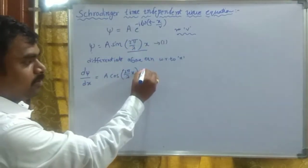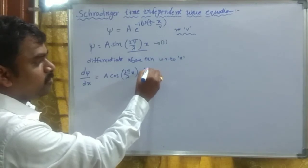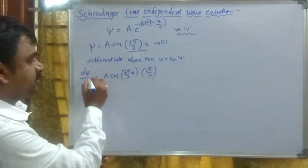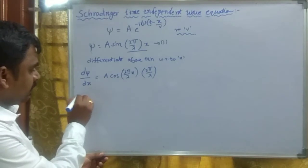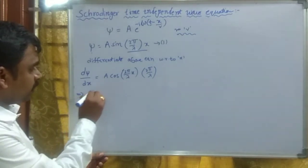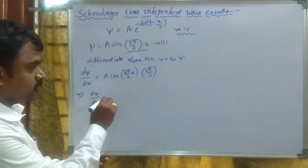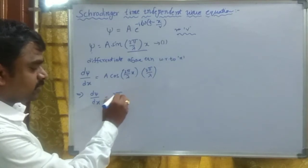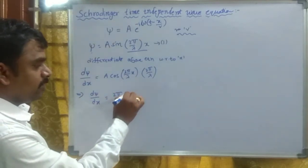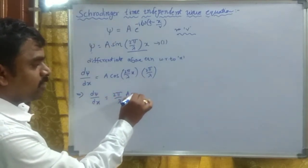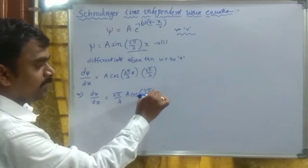We differentiate the inner term, obtaining 2π/λ — since dx/dx equals 1. Since 2π/λ is also a constant, we write it outside, giving: dψ/dx = (2π/λ) · A·cos(2π/λ · x).